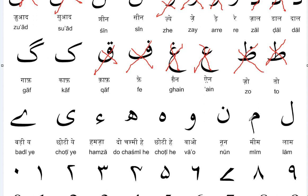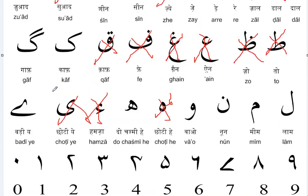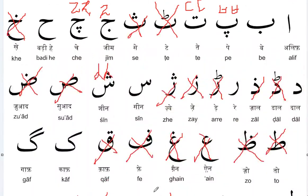Qaf and Kaf — these two sounds do exist in Korean. Lam also exists, Meem also, Noon also. Wao doesn't exist. Haa exists. Hamza of course doesn't exist. Ye also exists sometimes. So these are the comparisons of the Urdu alphabets with the Korean alphabets.